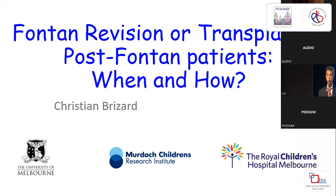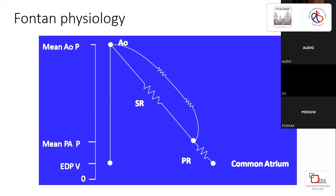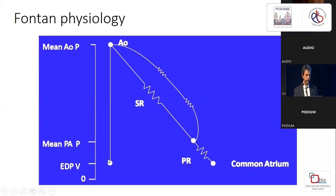A bit of physiology which I think is important to understand. It can be schematized very easily: the end-diastolic pressure of the ventricle, the energy delivered by the single ventricle, the mean aortic pressure, and the energy progressively lost across the systemic resistances, the pulmonary arteries and pulmonary resistances. A circulation between two capillary beds is a portal circuit — so a Fontan circulation is a portal circuit.